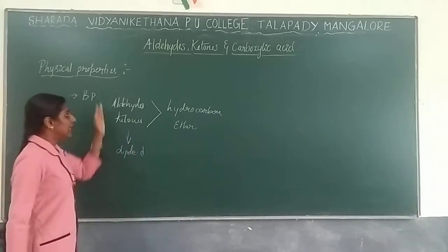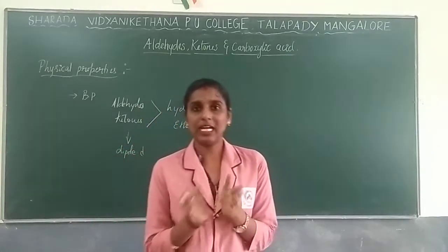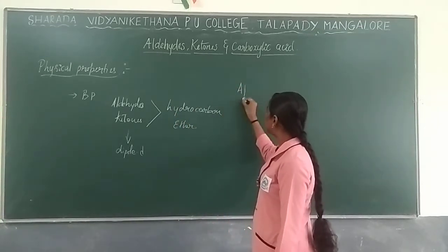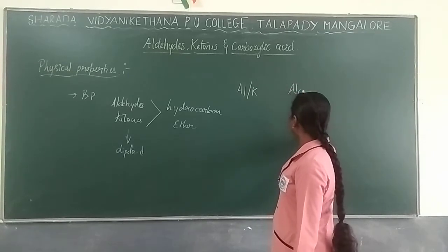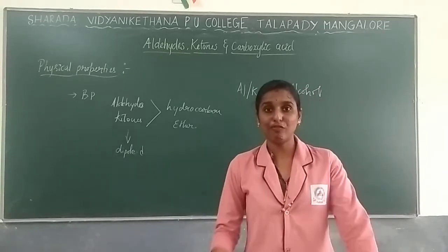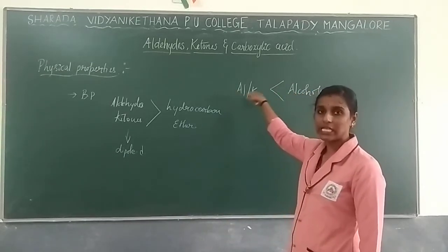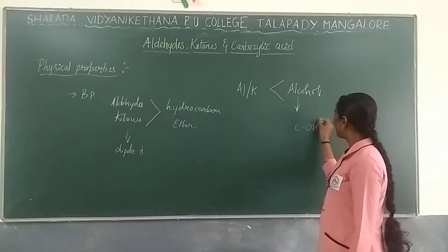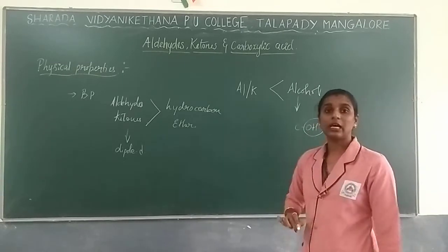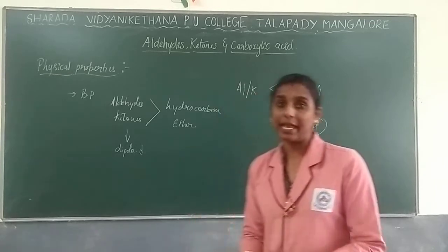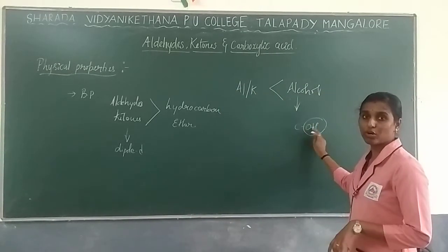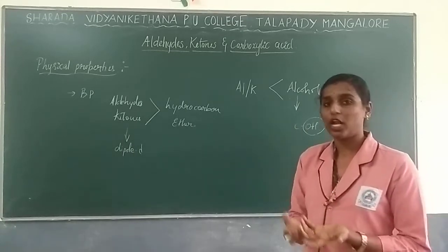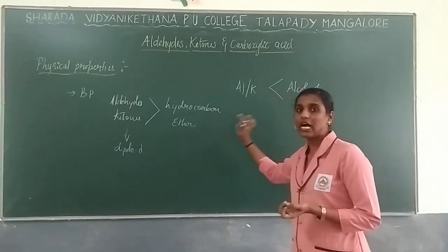Due to the dipole-dipole interaction it is difficult to break the intermolecular forces, so more temperature is needed. However, when you compare aldehydes and ketones with alcohols, alcohols have higher boiling point than aldehydes and ketones, because alcohols have intermolecular hydrogen bonding which is higher. For that reason, alcohols have higher boiling point when compared with aldehydes and ketones.